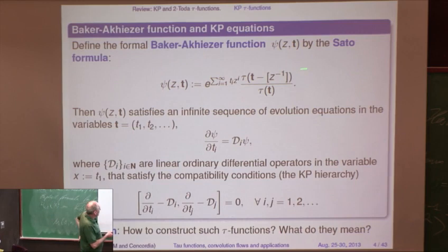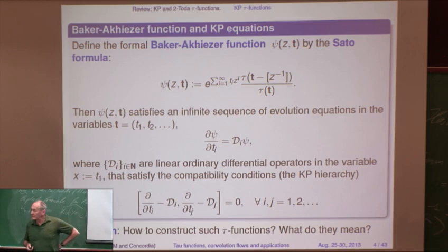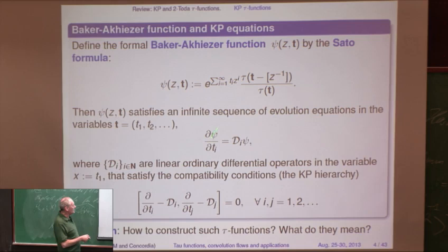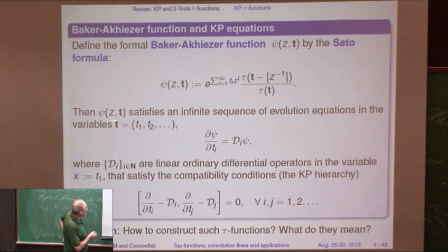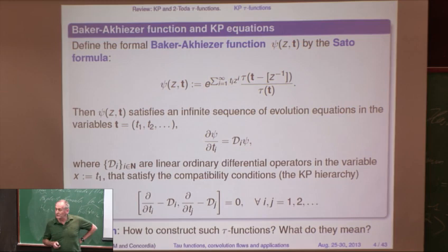The usual trick is to identify another thing called the Baker or Baker-Akhiezer function, which depends on an additional spectral parameter Z. We translate tau again by one of these terms, Z inverse in square brackets, and multiply by the infinite exponential series — for the moment ignoring convergence, it's just a formal thing. Differentiating with respect to the exponents and arguments, it turns out that if the Hirota bilinear equations are satisfied, then psi satisfies an infinite sequence of evolution equations generated by ordinary linear differential operators D_i in the first variable X (where T1 = X). This infinite system has compatibility conditions because they're all satisfied simultaneously, and that is the Kadomtsev-Petviashvili hierarchy, of which we saw one — the generic case, the KP equation, written on the board a few times.